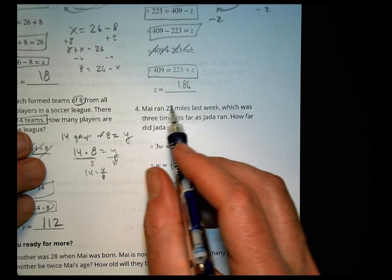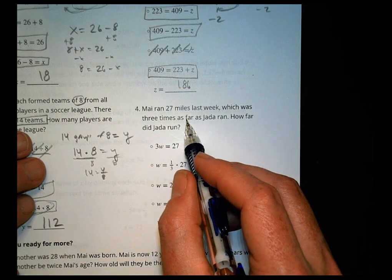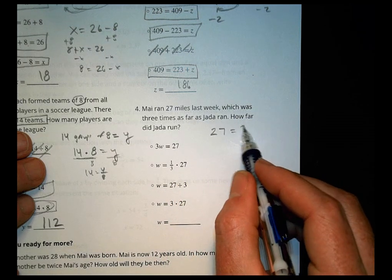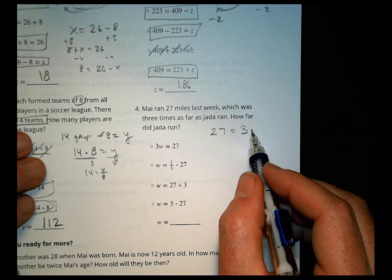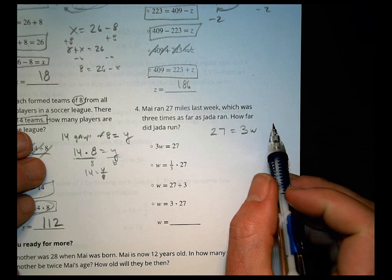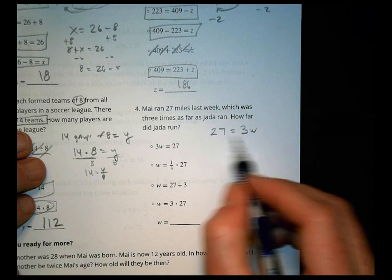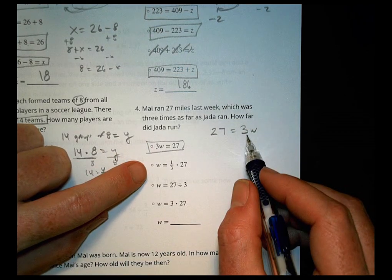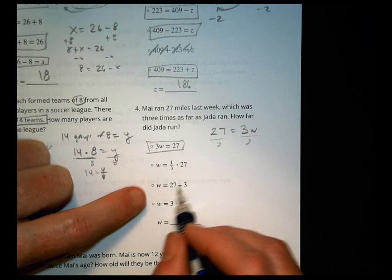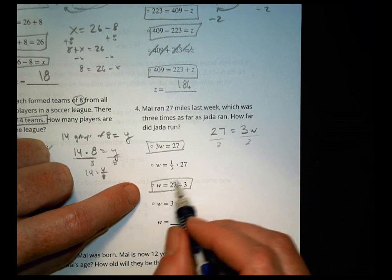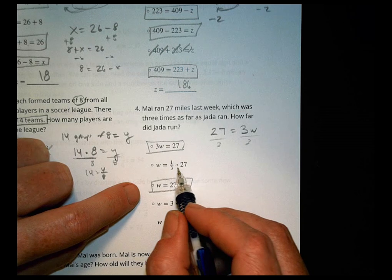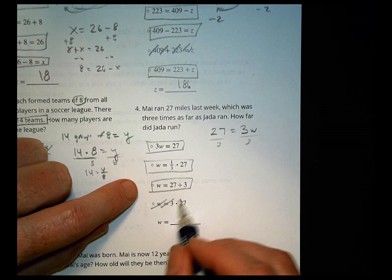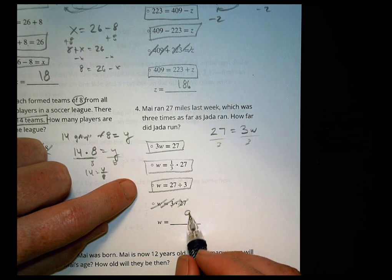And finally, May ran 27 miles last week, which was three times as far as Jada ran. Wow, way to go. So she did 27, and that equals three times whatever Jada did. Now Jada did, we're calling W, so we'll do that one. Do I see three W equals 27? Sure do. It's right there. Can I get W by itself? Yeah. If I divide by three, divide by three, divide by three. So 27 divided by three is there, which is the same as multiplying by a third. That's multiplying by the reciprocal. Definitely not that one there. That's not going to work. And 27 divided by three is equal to nine.